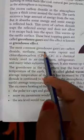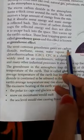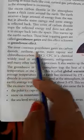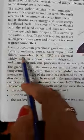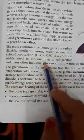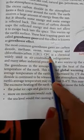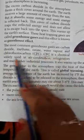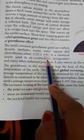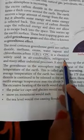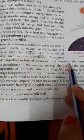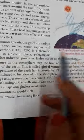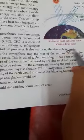The most common greenhouse gases are carbon dioxide, methane, ozone, water vapor, and chlorofluorocarbon (CFC). Chlorofluorocarbon is a chemical widely used in air conditioners. It also warms up the atmosphere. This is where you need to read the chapter up to.